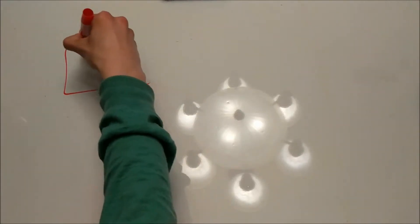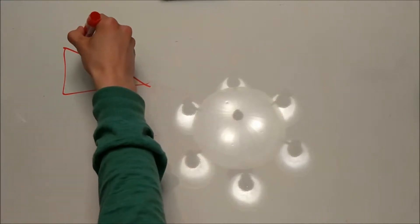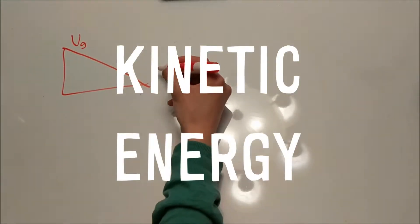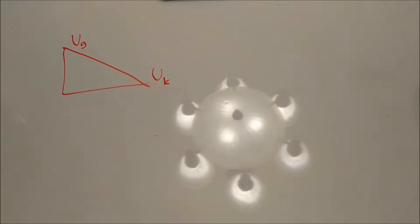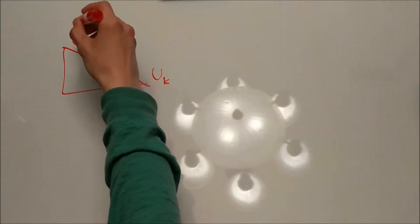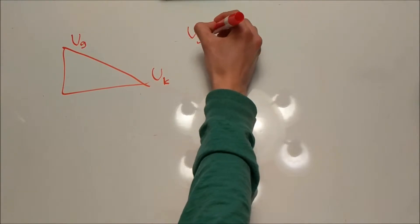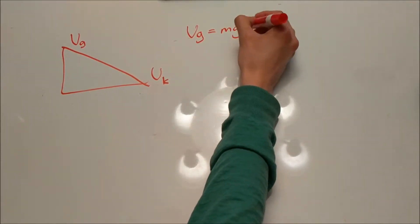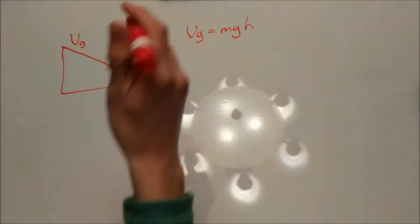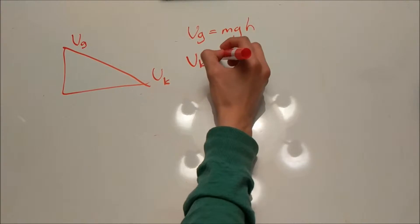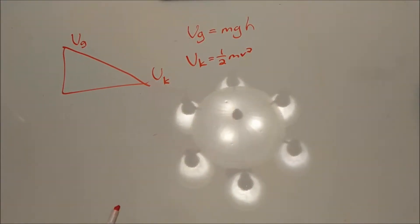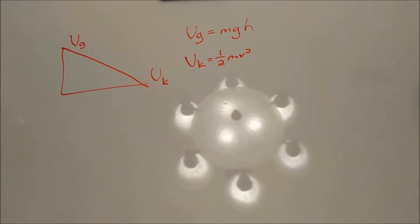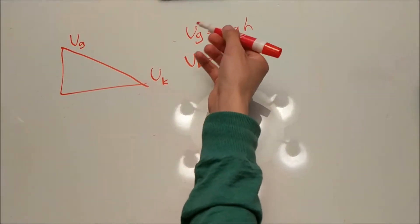At the top of the hill, I had a certain type of energy called potential energy, which we're going to represent as U sub G. At the bottom of the hill, I had kinetic energy, which we're going to represent as U sub K. What I want to figure out is the final velocity I had at the bottom of the hill and see if that matched our actual recorded value. To calculate potential energy, we use the equation mass times acceleration due to gravity times height. To solve for kinetic energy, we use the equation one-half times mass times velocity squared. Since our potential energy at the top of the hill was equal to our kinetic energy at the bottom, we can simply set these two equations equal to each other.